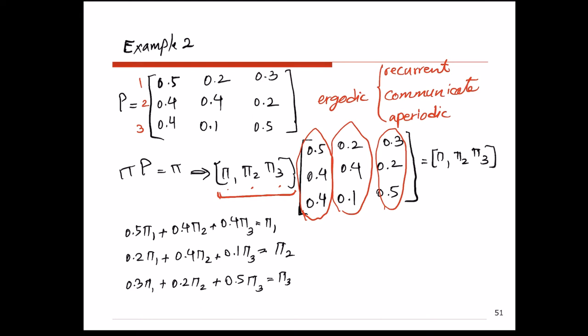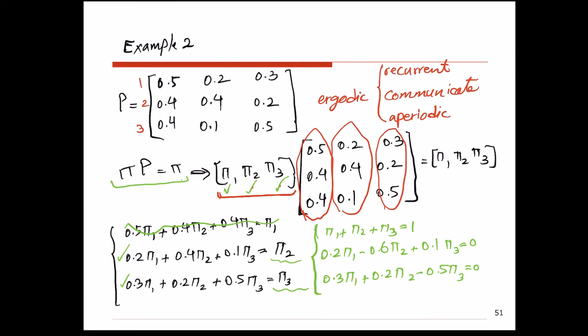We have three unknowns — pi 1, pi 2, pi 3 — and need three independent equations. As always, one equation from pi·P = pi is dependent on the rest. We drop one — for example, equation 1 — and add the equation that holds for all Markov chains: pi 1 + pi 2 + pi 3 = 1. We then bring all the pi terms to the left side of the remaining equations, yielding three independent equations.